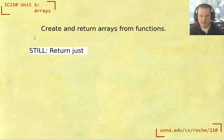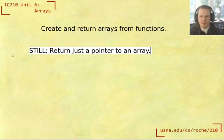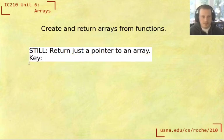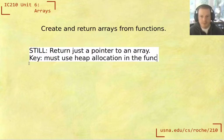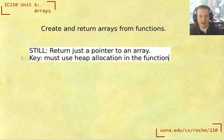The same thing applies here - we return just a pointer to an array. So the question is, how can we actually create an array in a function if we're only able to return a pointer to it? The key is that we must use heap allocation in the function. You don't have any choice about this. It's not like when you're allocating arrays in main where you can use stack or heap based arrays. In this case, you must use heap allocation.